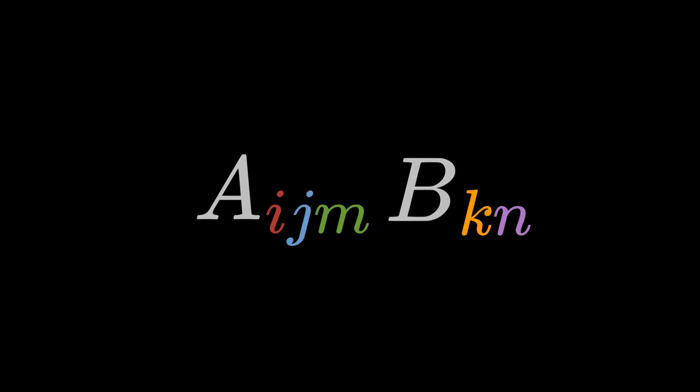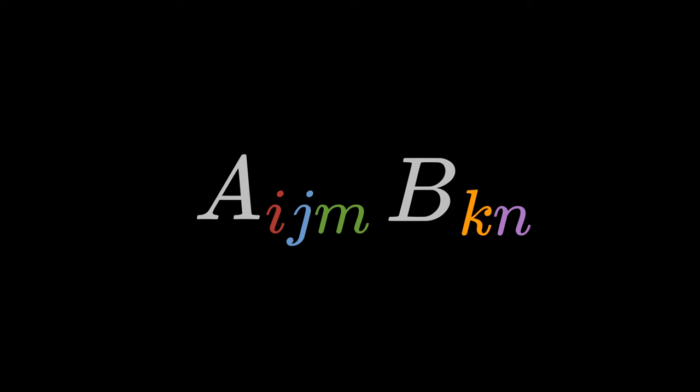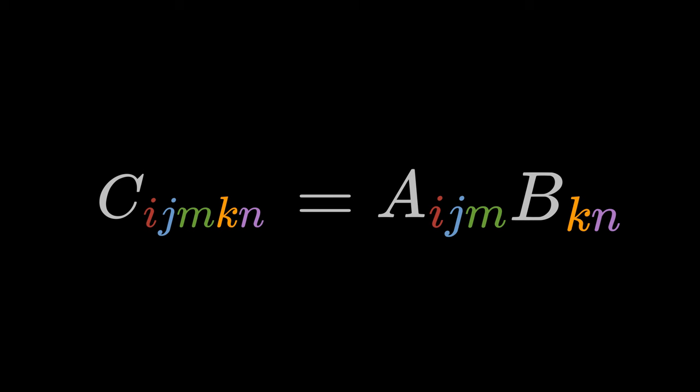For example, we can also form the tensor product with the third order tensor Aijm and the second level tensor Bkn. The result is a fifth order tensor Cijmkn.